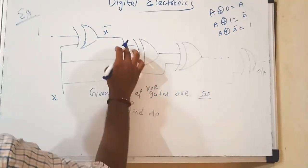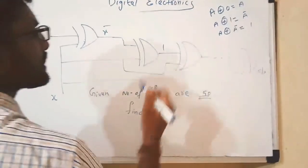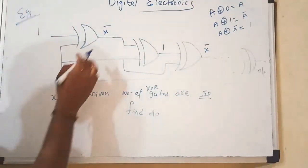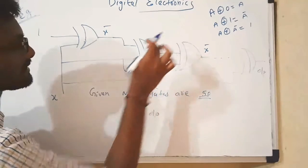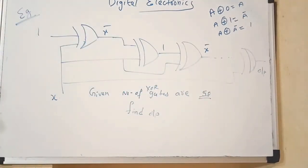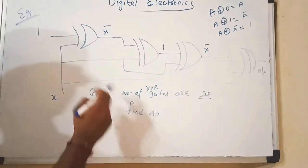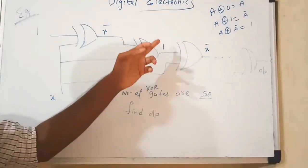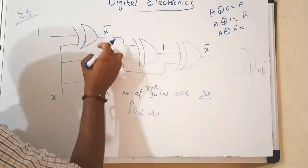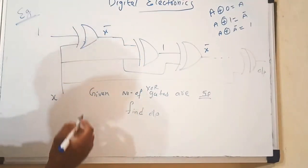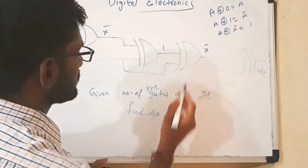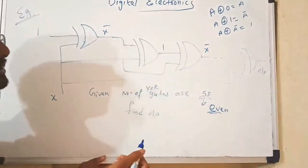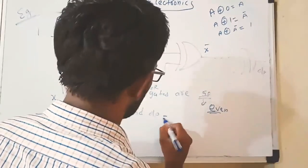Here the input is X and the other is X-bar, so X XOR X-bar is nothing but 1. Similarly, X XOR 1 is nothing but X-bar. So we can check: at the output of the first gate the value is X-bar, and at the second gate the value is 1. At odd-numbered gates we get X-bar; at even-numbered gates we get 1. Given that there are 50 gates and 50 is an even number, the output is 1.